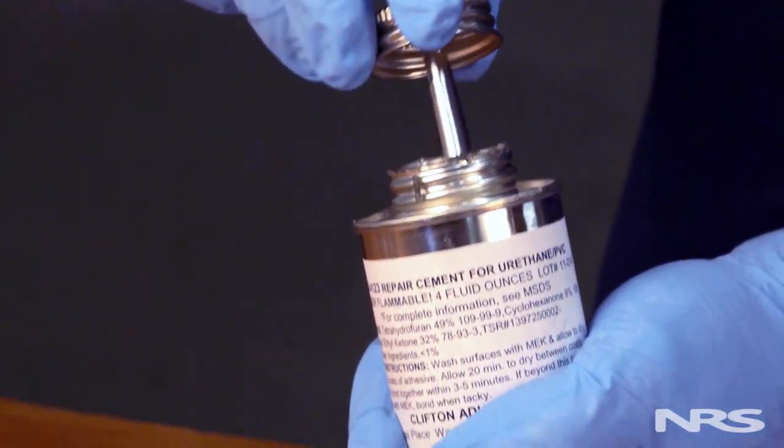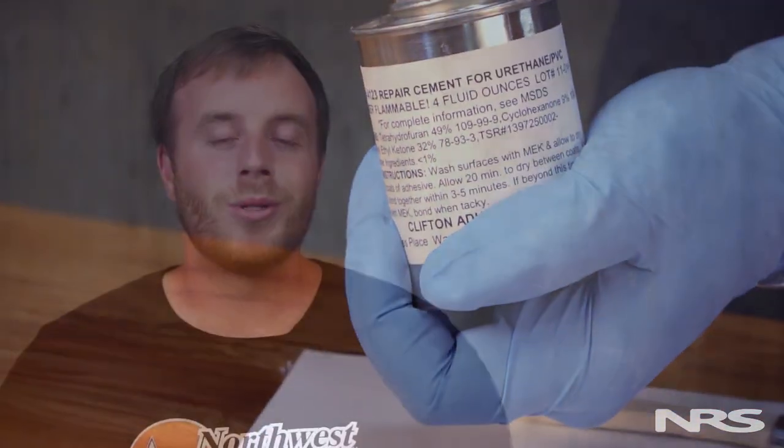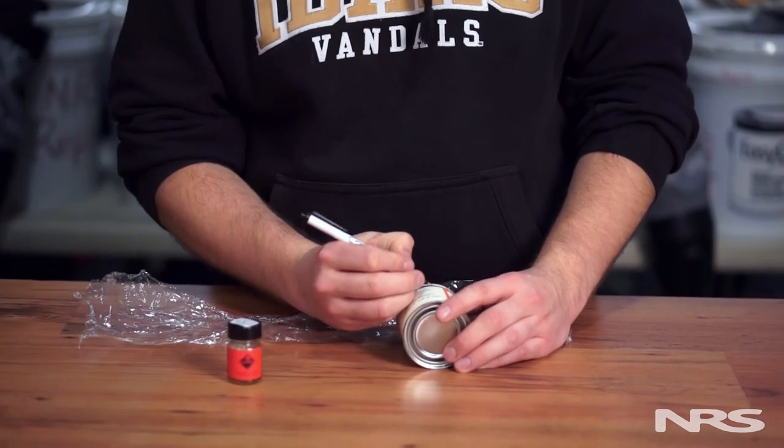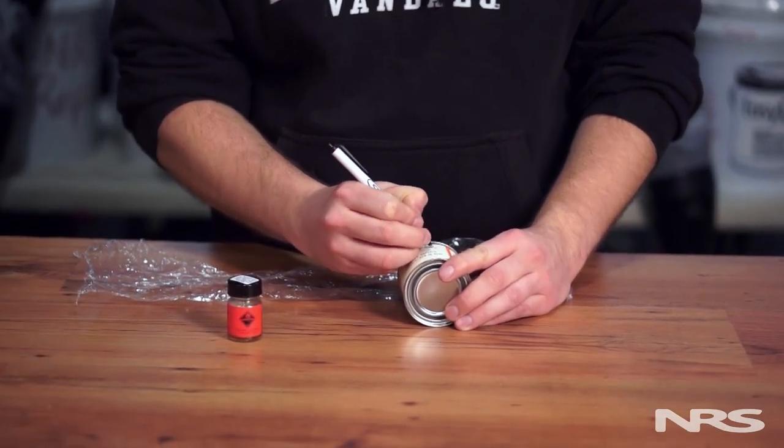The major differences between these glues are their bond strengths. For most patching applications, you'll want to use Clifton's urethane adhesive. These glues have a shelf life of one year, however they won't show any signs of expiration. To help determine when it will expire, write the date of purchase on your glue.